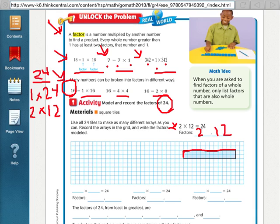Then, can you do 3 times anything? 3, 6, 9, 12, 15, 18, 21, 22, 23, 24. Yes, you can do 3 times 8. Can you do 4 times anything to get 24? Yes, you can do 4 times 6.